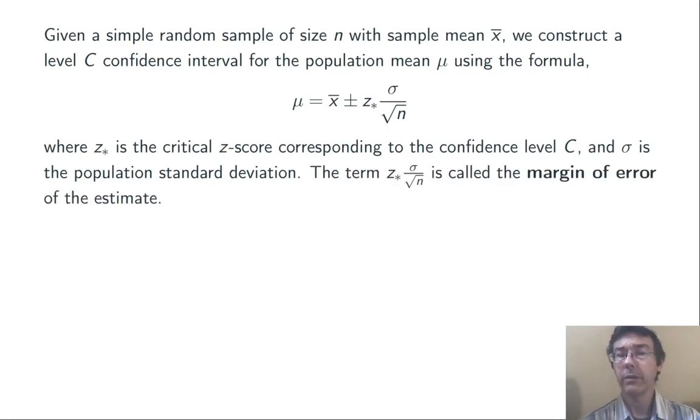The term z* σ/√n is called the margin of error of the estimate. The idea is that when we construct a confidence interval like this, μ will be within the margin of error of x̄, our sample mean, C percentage of the time, roughly speaking.